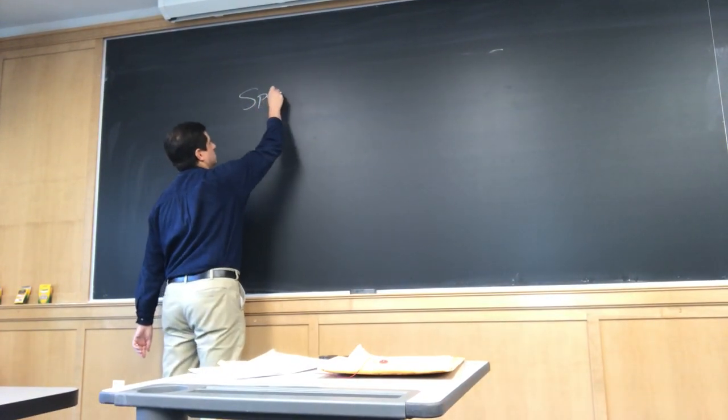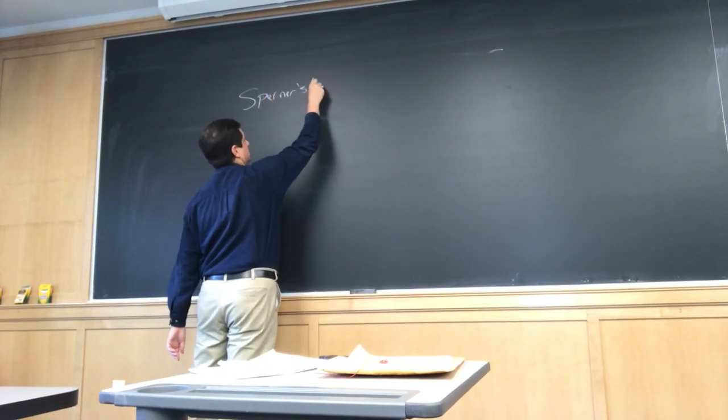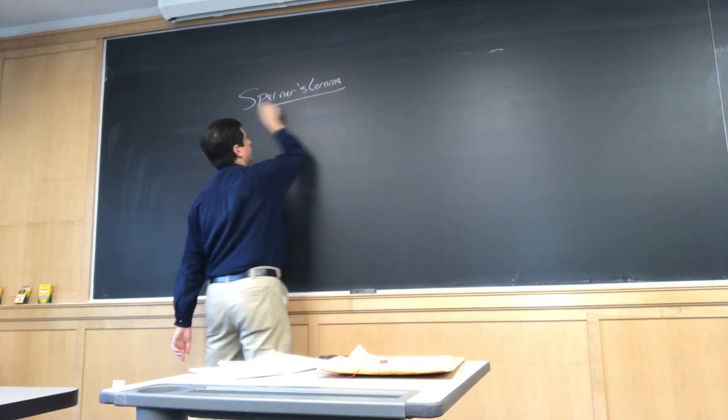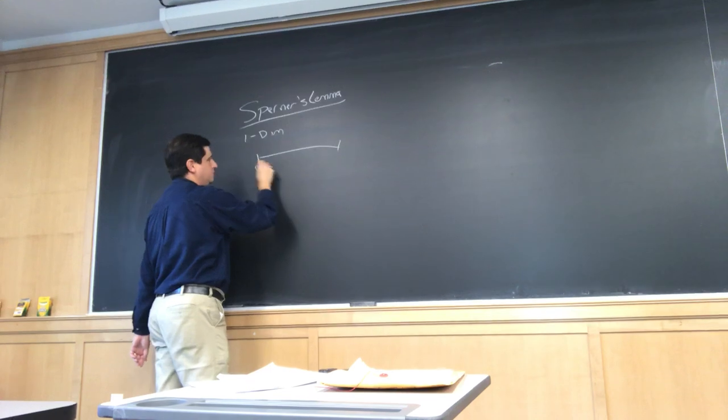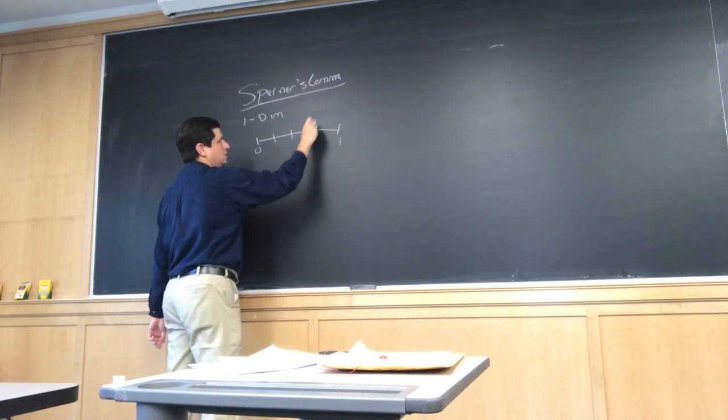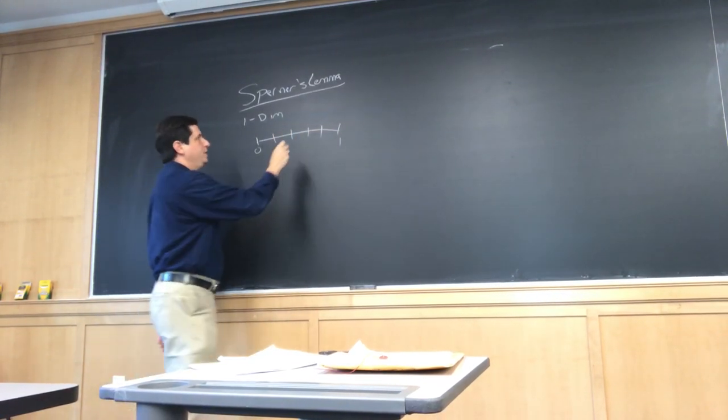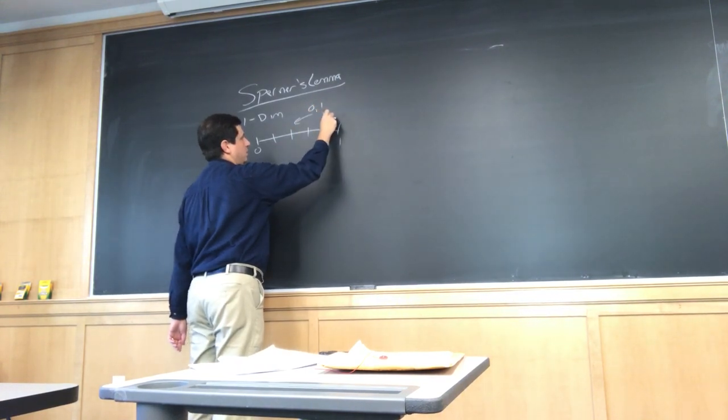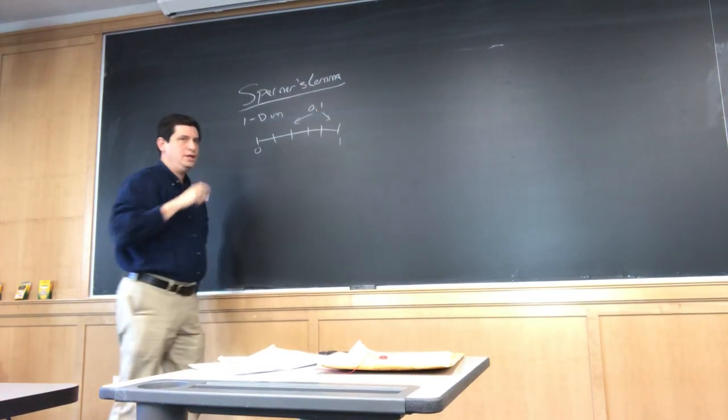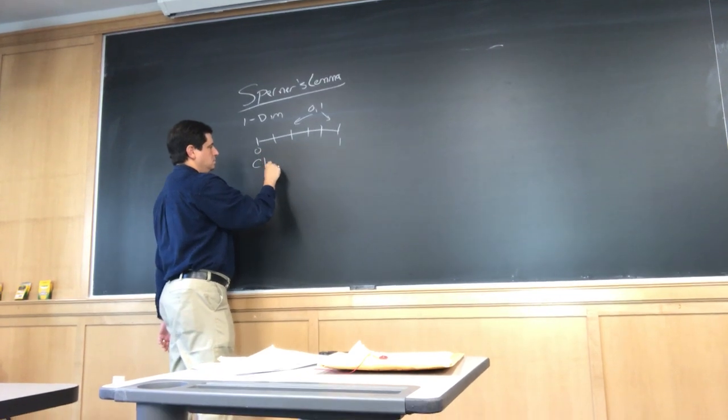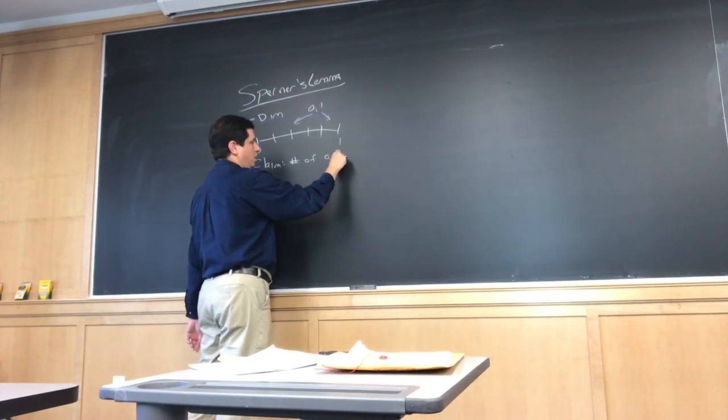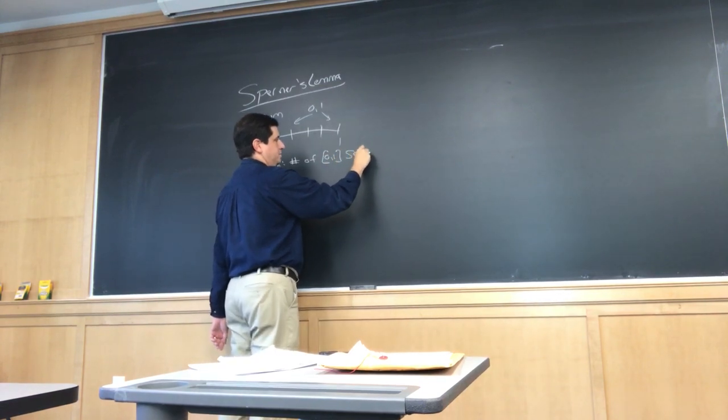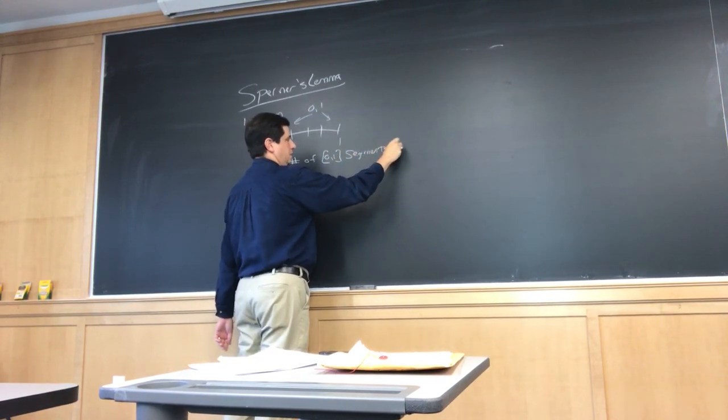So Spurna's lemma. And we'll start off in one dimension. So we have 0, we have 1, and then in the inside, over here, we can put in either a 0 or a 1, anywhere in through here. And the claim is the number of 0, 1 segments is odd.